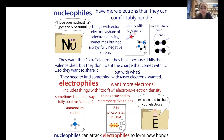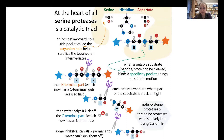The nucleophile is going to come from a deprotonated hydroxyl or thiol group. With the serine, you'll have an O minus; with water, an OH minus; and with the cysteine, you'll have an S minus. So let's take a look at how these proteases work, now that we have this basic terminology underway.